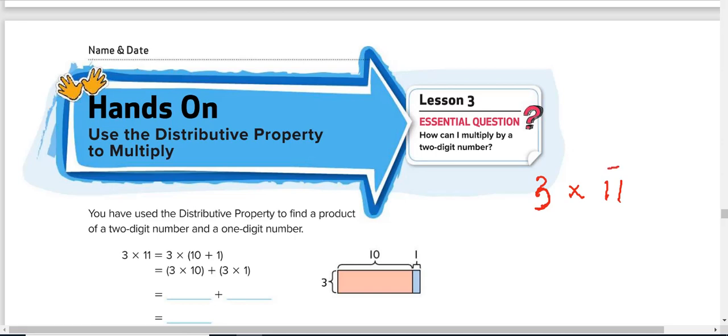Using the technique of distributive property, what it says is look at the two-digit number. You can separate this number into 2. So let's write 11. Separate this number into 2. The ones place digit is 1, so that is 1. And the tens place digit is also 1, which is 10. So 11 has been separated into the sum of 10 and 1.